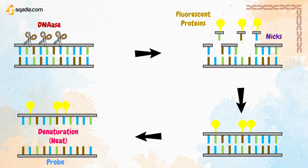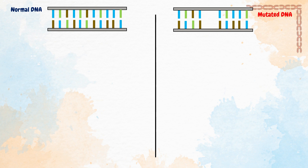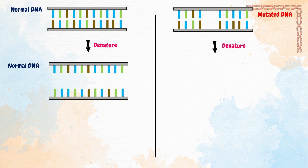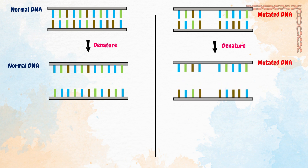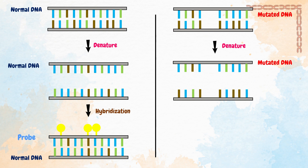Now let's perform Fluorescent In Situ Hybridisation. This is normal DNA, and this is mutated DNA. Normal DNA is denatured — denaturation can be done by heating the cell. Mutated DNA is also denatured. Then cooling down allows hybridisation, meaning the probe attaches to the gene of interest.